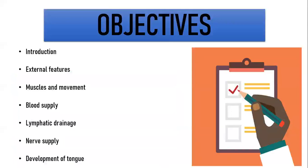As an essay, the sections under which you will include the topic are: a general introduction of about one or two lines, followed by external features, muscles and movements, blood supply, lymphatic drainage, nerve supply, and development of tongue. As a short note, muscles and movement is a very important short note, and development of tongue is also another very important short note. Nerve supply is important for your practicals for both anatomy and physiology, and you can expect an OSPE chart from nerve supply of tongue in your practicals.